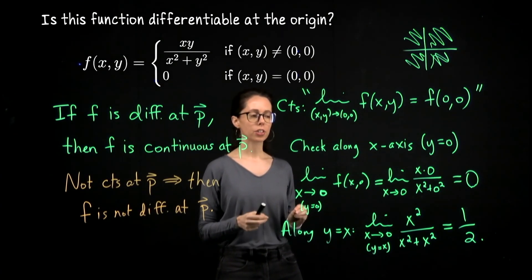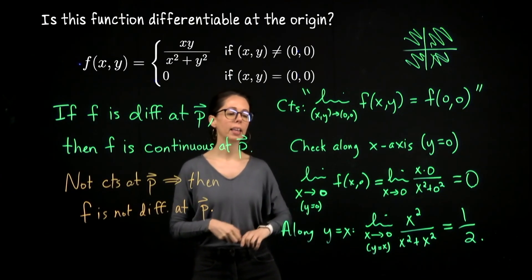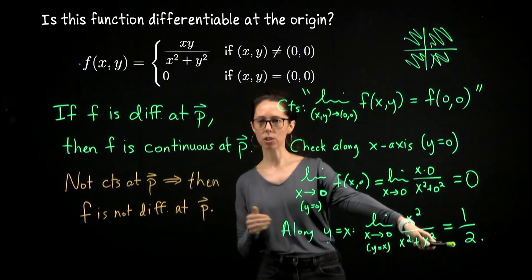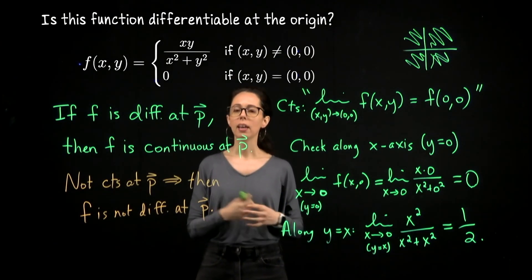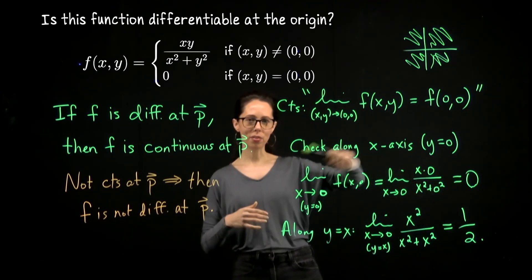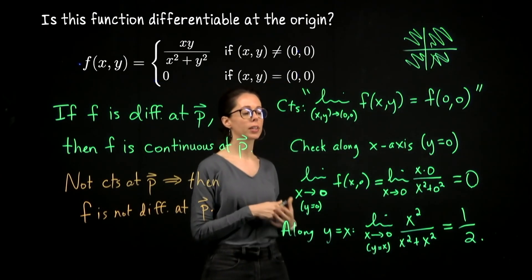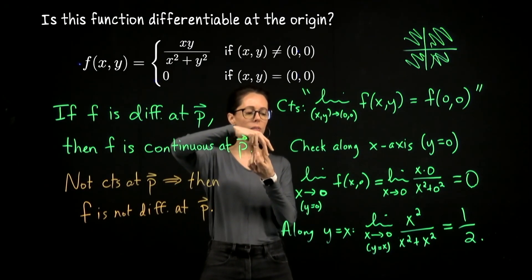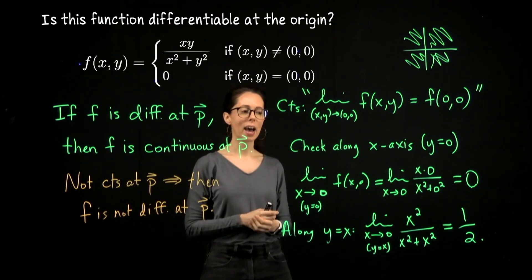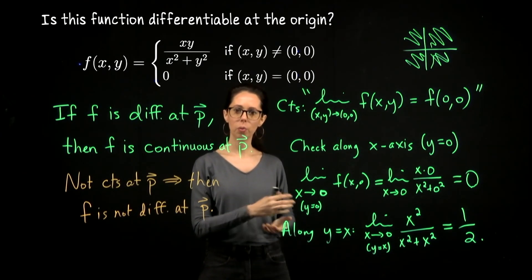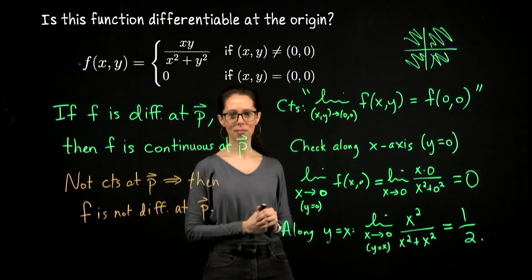Let me wrap up and leave you with a picture of this function. I'll spin it around and highlight the axes, the line y = x where the function tends to 1/2, and y = -x where it goes to -1/2, so you can see the global behavior. Because this function is not differentiable, you'll notice a pinching behavior near the origin — a kind of steepness — which connects to everything we worked through when assessing differentiability. Thank you for your attention.